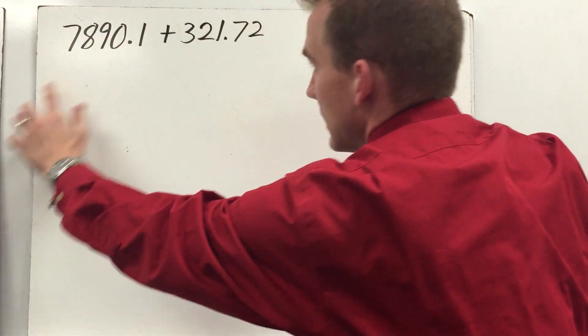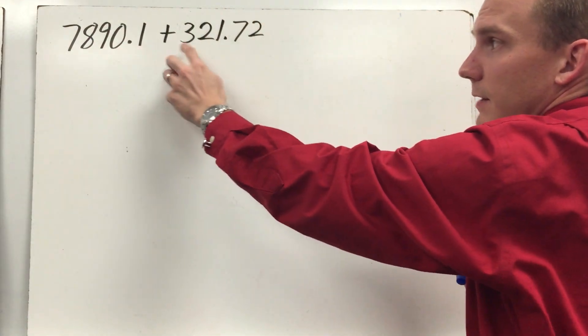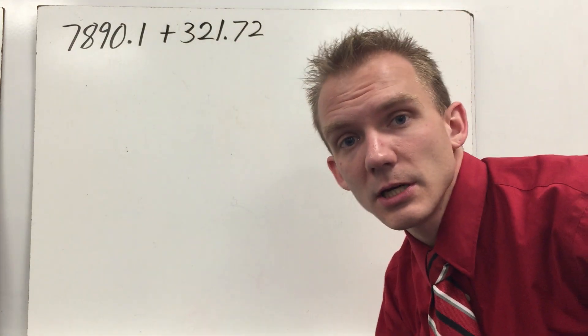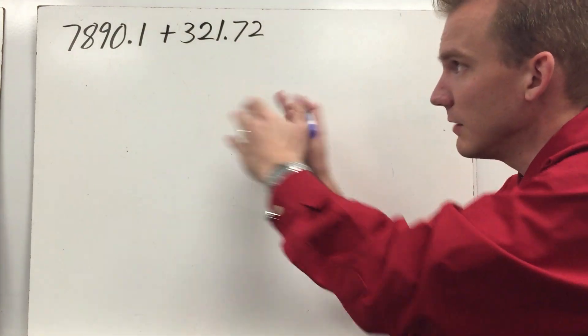Here's a little bit of a tricky example. I have one, two, three, four, five, and one, two, three, four, five. I have five digits in each number, but my decimal points don't line up evenly.